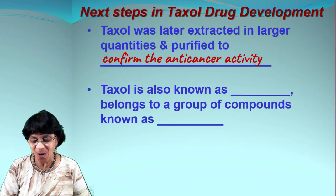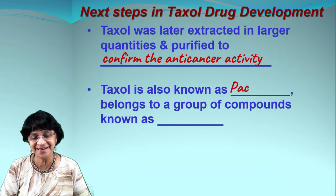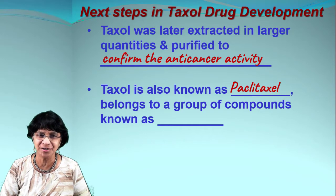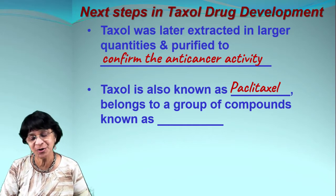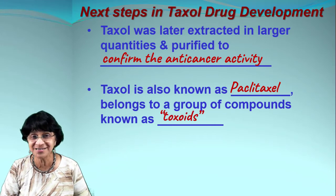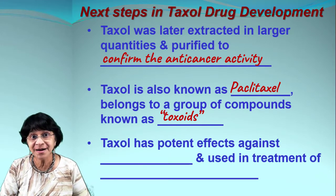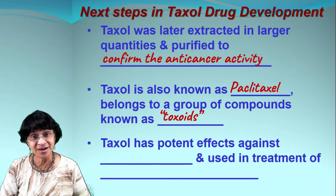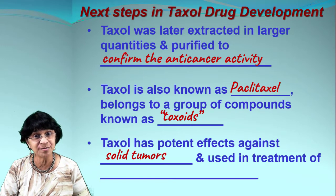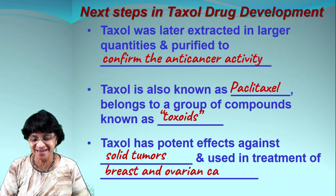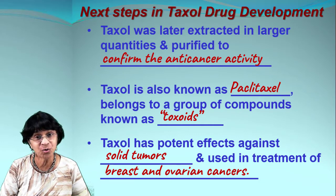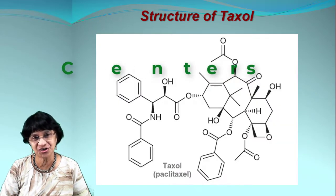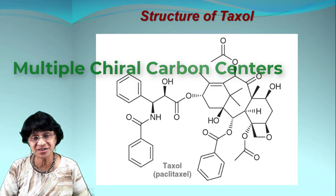Taxol is also known by the common name paclitaxel, and there are many other derivatives. It belongs to a group of compounds called taxoids — they are toxic but also have anti-cancer activities. Taxol has potent effects against solid tumors and can be used in the treatment of breast and ovarian cancers.